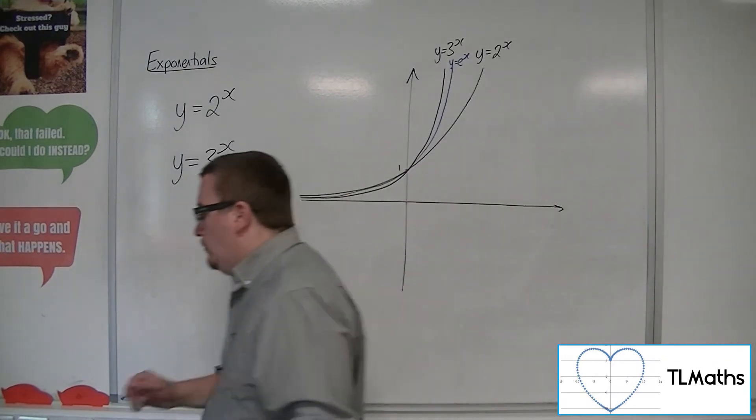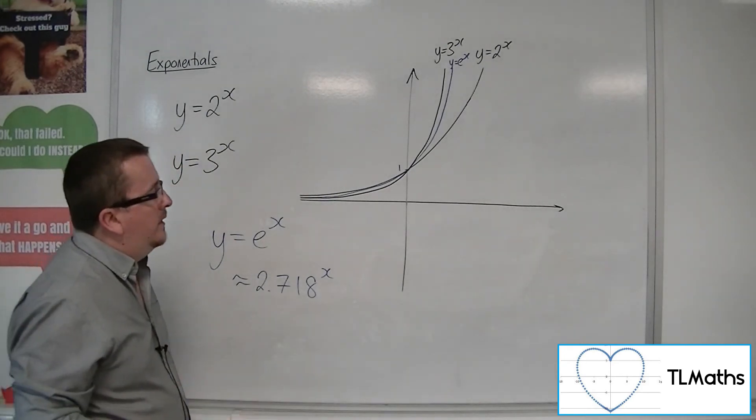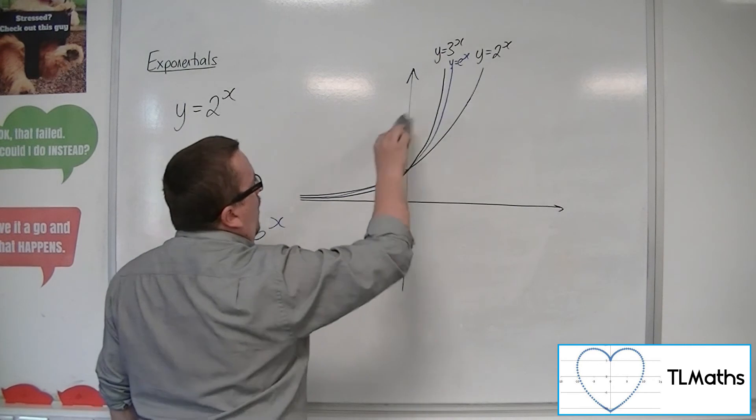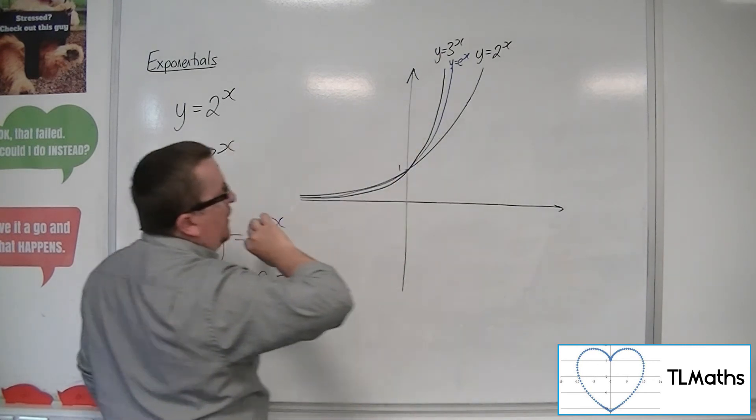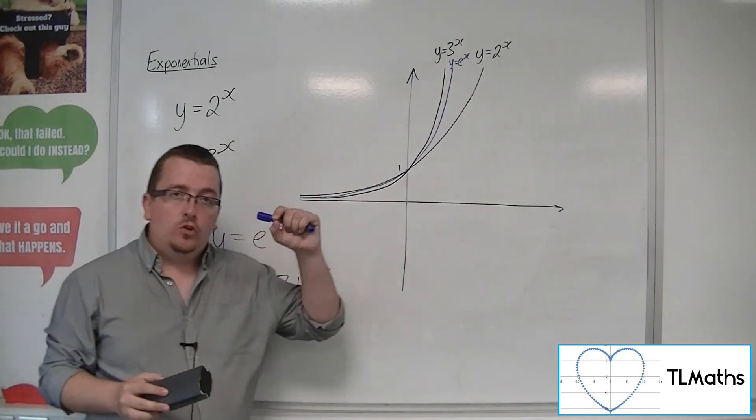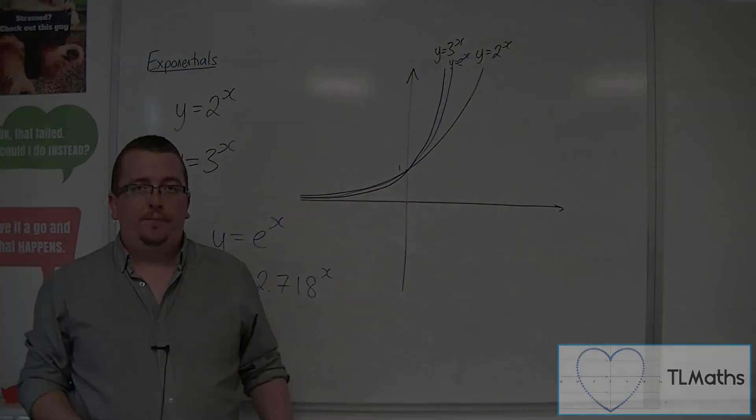Now, what you will be looking at in the next section really relates to the fact of why we look at e to the x on a graph, and what is special about its gradient of the curve at that point.